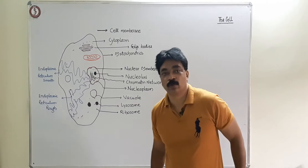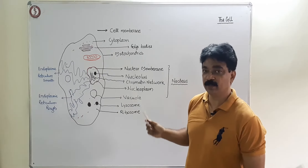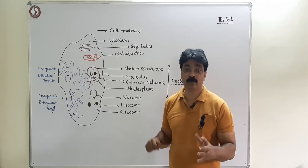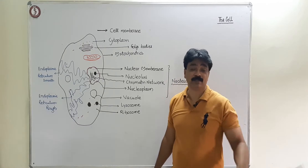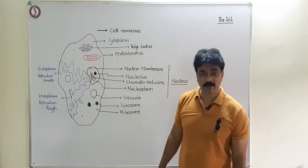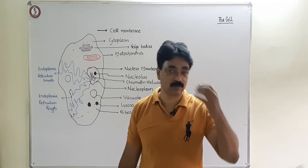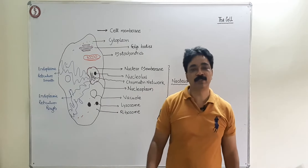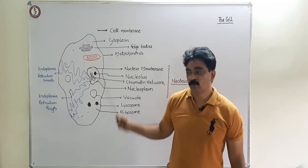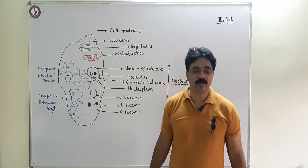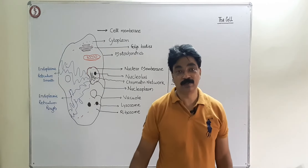Now let us talk about the cell. This is a second video where we are taking up a general cell — what organelles it has, what its general structure is. There will be some basic things in the cell which most cells will have, with little deviation depending on which cell we are talking about. The diagram I have made is of an animal cell, and most animal cells will contain these structures.